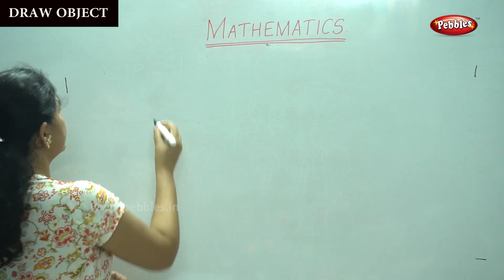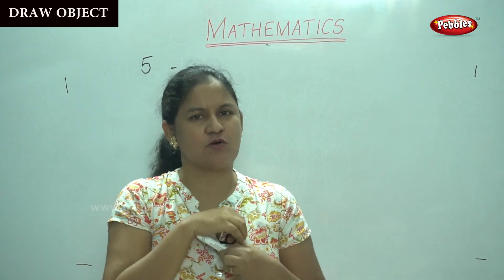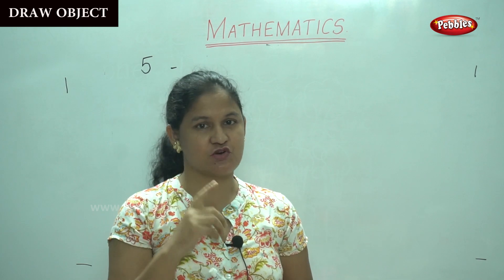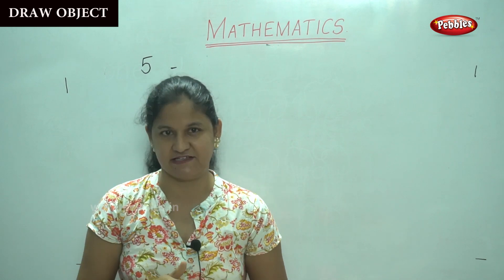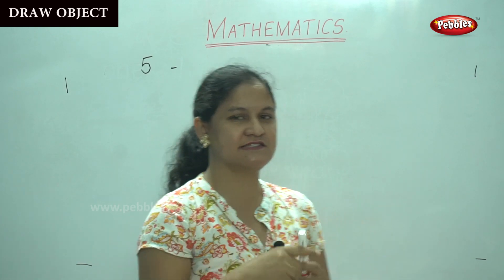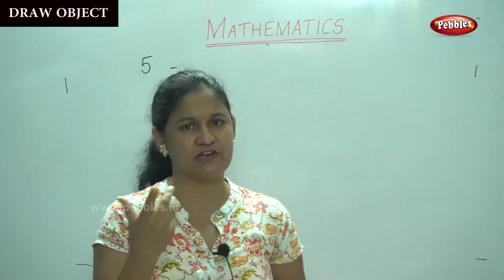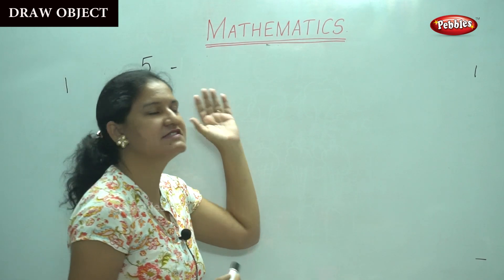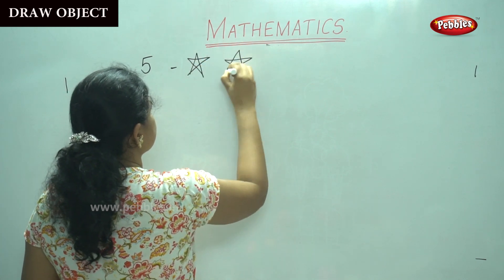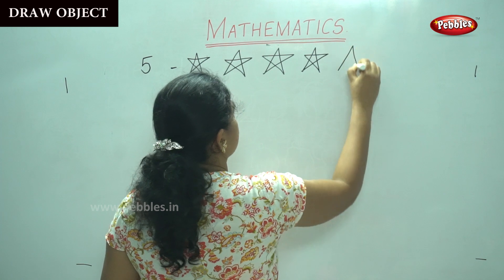The next number, number 5. What objects shall we draw for number 5? Shall we think of any object that is easy and something that we like? I am going to draw something that appears in the sky at night. Can anyone tell me what that is, children? It is the stars. We find the stars twinkling in the sky at night. So, I am going to draw 5 stars. 1, 2, 3, 4, 5.